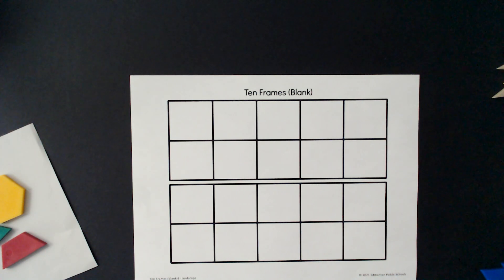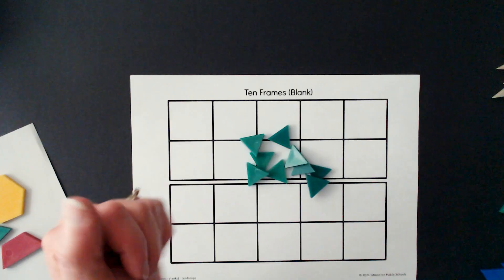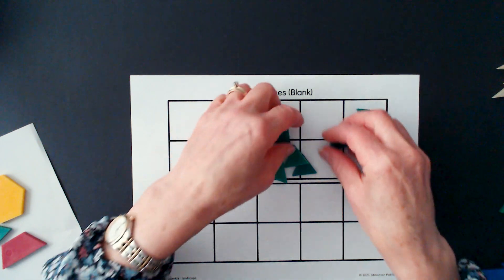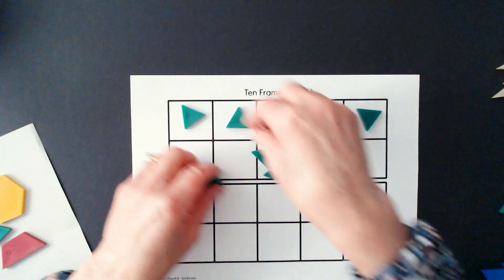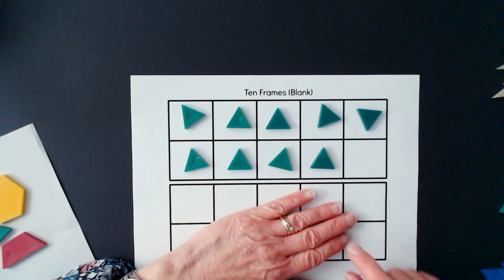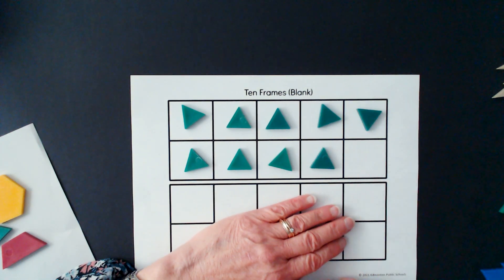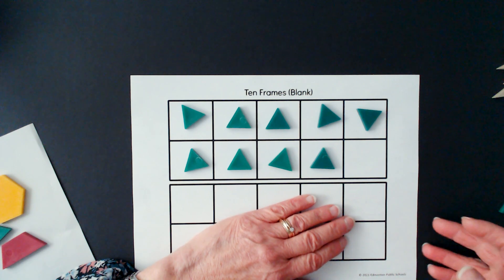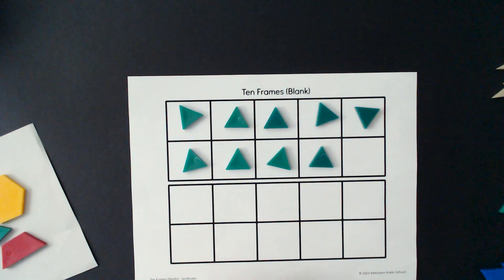Let's try one more. Let's put these on and I know that there are nine here on the ten frame because I see one less than ten. So here's one of the ways in which we can use pattern blocks to show how many.